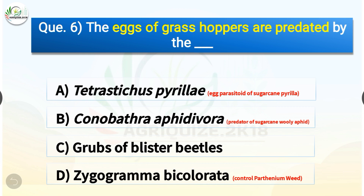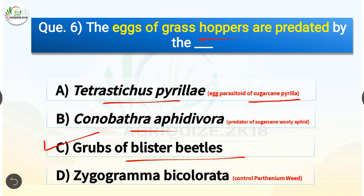Question number six: The eggs of grasshopper are predated by which of the following? The options are: Tetrastichus pyralea, Conobathra aphidivora, grubs of blister beetle, or Zygogramma bicolorata. The correct answer is option C — grubs of blister beetle. The egg parasitoid of sugarcane pyrilla is Tetrastichus pyralea; Conobathra aphidivora is the predator of sugarcane woolly aphid; and Zygogramma bicolorata is used for control of parthenium weed.